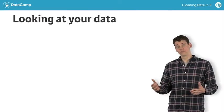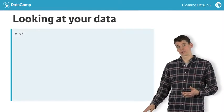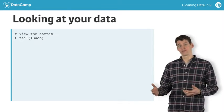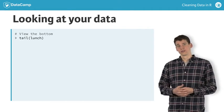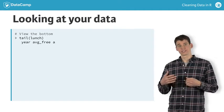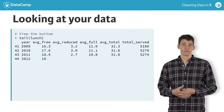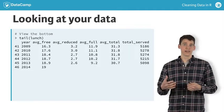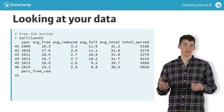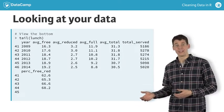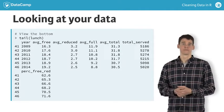We can also view the bottom of lunch with the tail function, which displays the last six rows by default. But again, that behavior can be altered in the same way with the n argument.